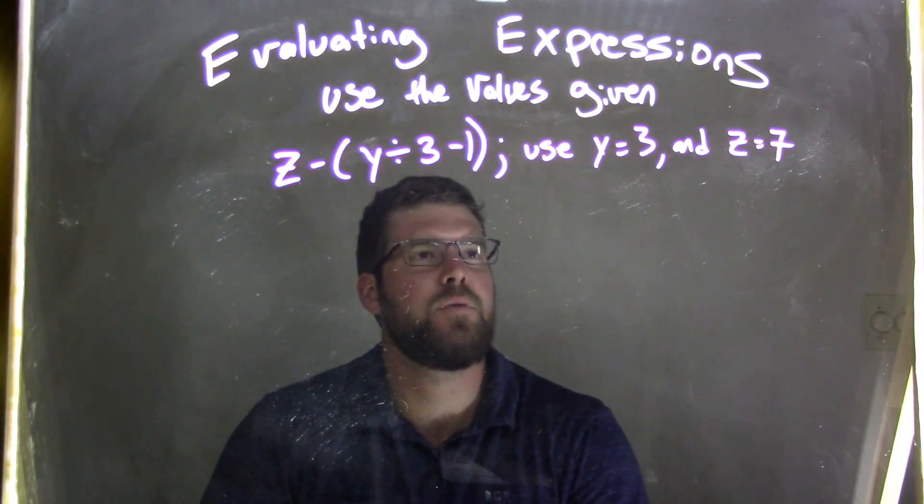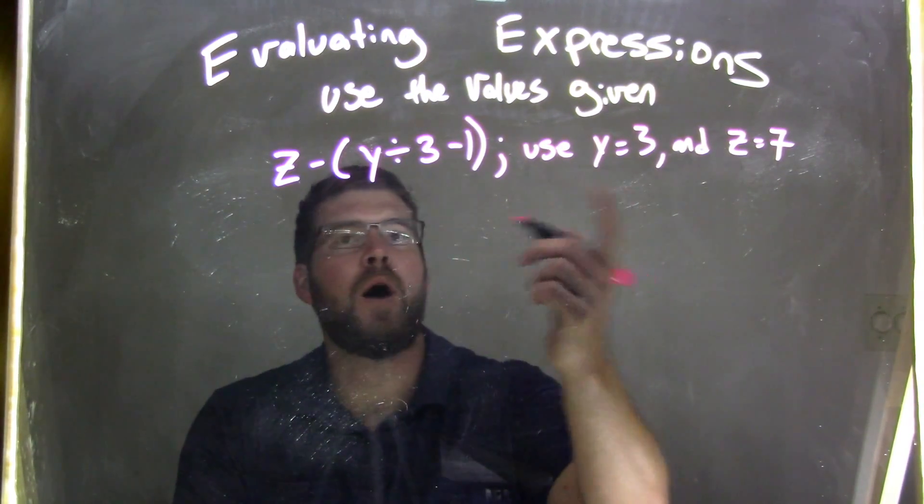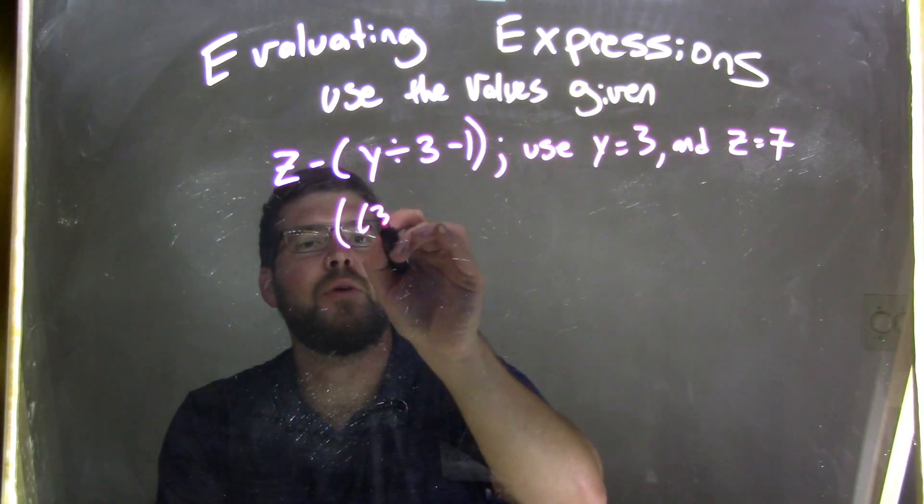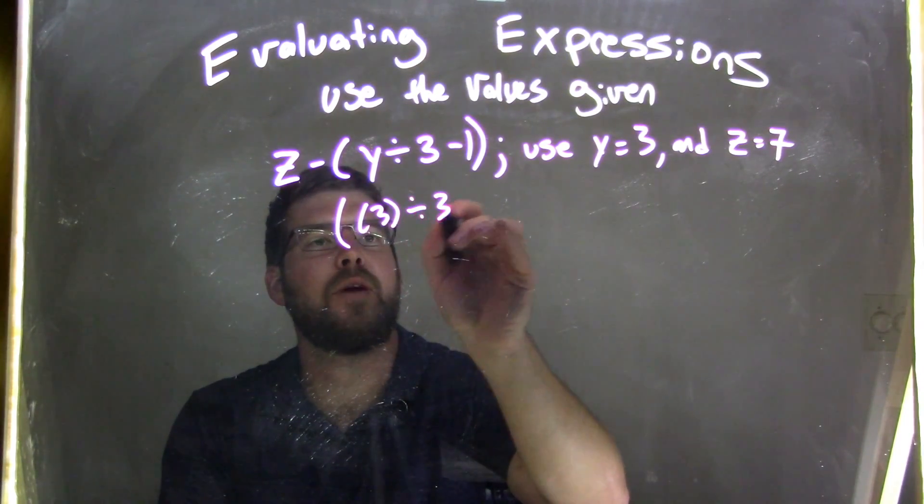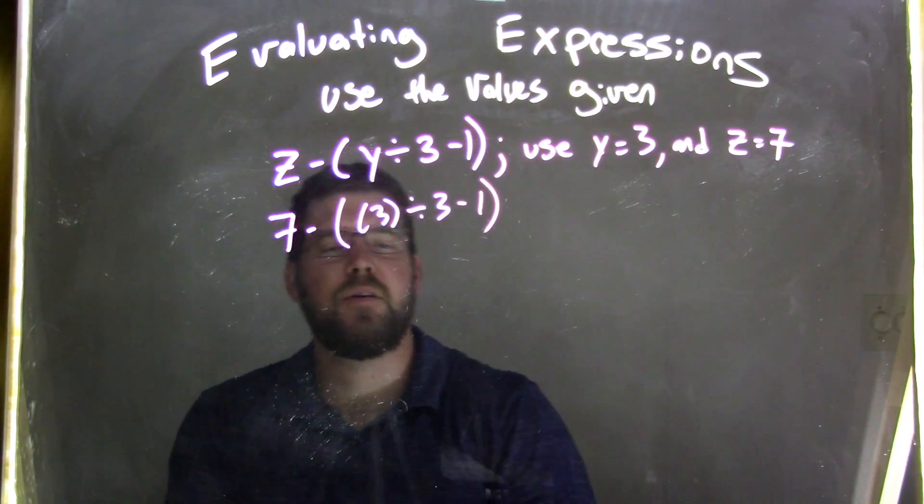We first want to substitute, so we have y equals 3 and z is 7. 3 goes in for y, so y is our 3 here, divided by 3 minus 1. And z is 7, so 7 minus on the outside.